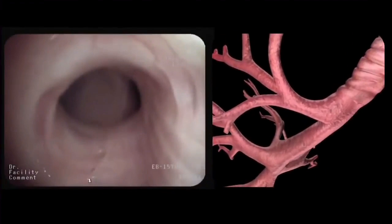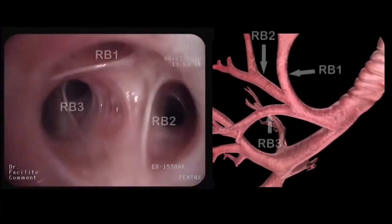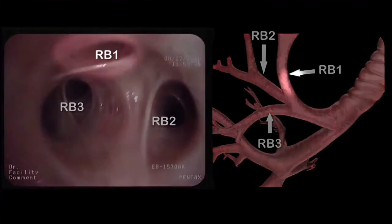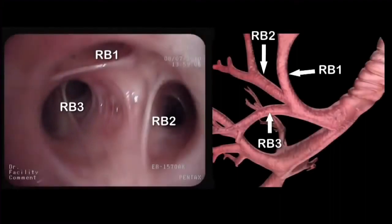We then enter the right upper lobe, which divides into the apical segmental bronchus or RB1, the posterior segmental bronchus or RB2, and the anterior segmental bronchus or RB3.